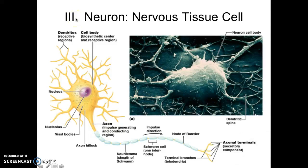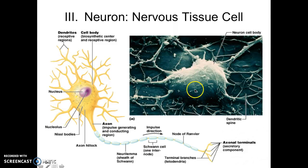Most of the lecture today is going to be on knowing the structure of the neuron. Your neuron is a cell — it is the cell of the nervous system. There are specific structures. This is actually what a neuron looks like with an electron microscope — this would be like the cell body.